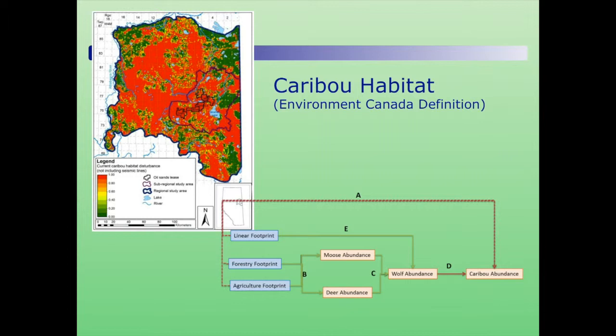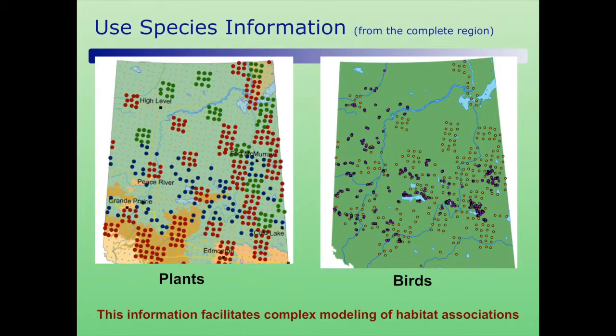We applied Environment Canada's definition of what is good and bad habitat — just applying somebody else's formula. You can then predict, based on the Environment Canada definition, where red represents relatively poor caribou habitat and green represents better habitat. You can get an idea of where you expect good and bad habitat throughout the area. In addition, you can use existing information to talk about how caribou interact with other predators and prey in the system, and you can mine existing data to evaluate predictive models for any given species.